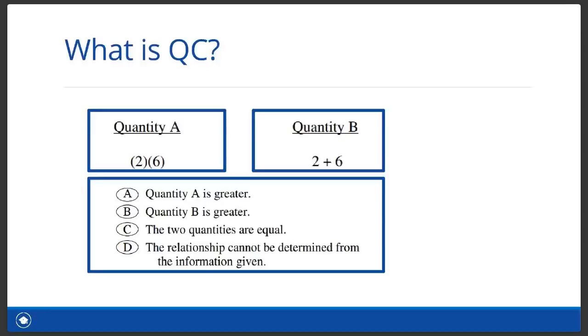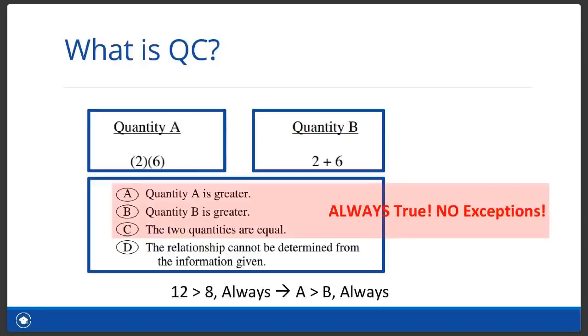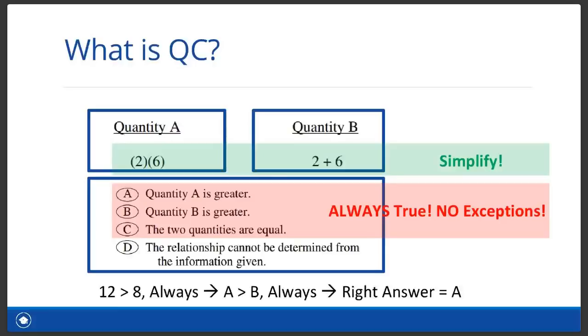Now, here's the first thing you need to know. For the answers, only choose answers A, B, or C if the corresponding statement is always true, no exceptions. If you can think of just one situation where the statement is not true, we can't choose that answer. Now, here's the next thing that you need to know. You need to figure out how to simplify the question. In this case, A and B are simply easy operations of only integers. So to simplify, we just calculate the answers. Your quantity A is 12 and quantity B is 8. Now, since 12 is always greater than 8, quantity A is always greater, so the right answer must be A.